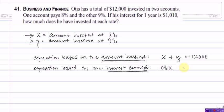And the interest earned on the second account can be represented by taking that interest rate in decimal form and multiplying it by the amount invested. And then those two values added together should equal the amount of interest that he has earned in one year, which is $1,010.